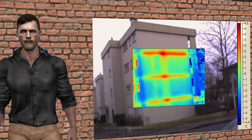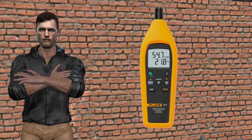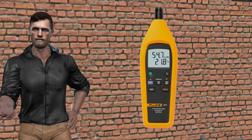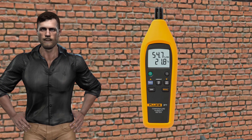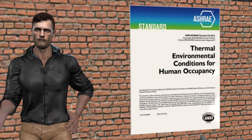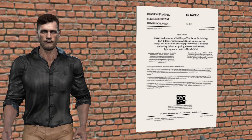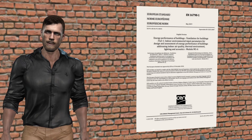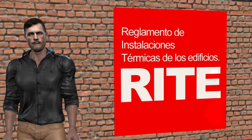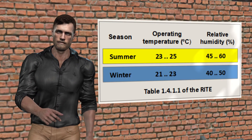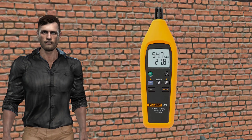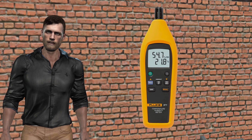To analyze the problem of humidity by condensation, we have at our disposal hygrometers such as the Fluke 971, which will allow us to measure the temperature of the air, its relative humidity and the dew point. In this way we can know if the temperature and relative humidity are within the values recommended by international regulations such as ASHRAE 55 or EN 16798-1. In Spain, for example, the regulation of thermal installations in buildings (RITE) establishes these values. The Fluke 971 also provides us with the dew point, which is a very important piece of information to know if condensation of water vapor can occur.